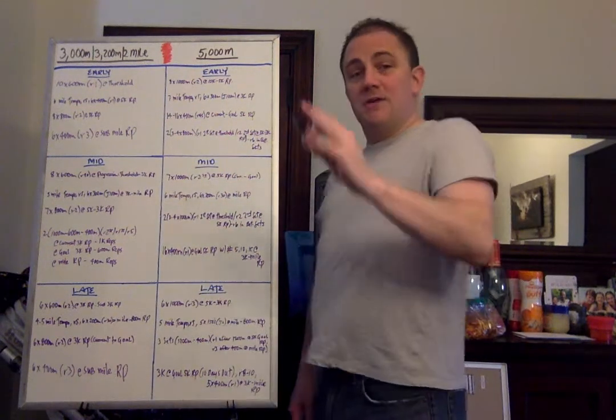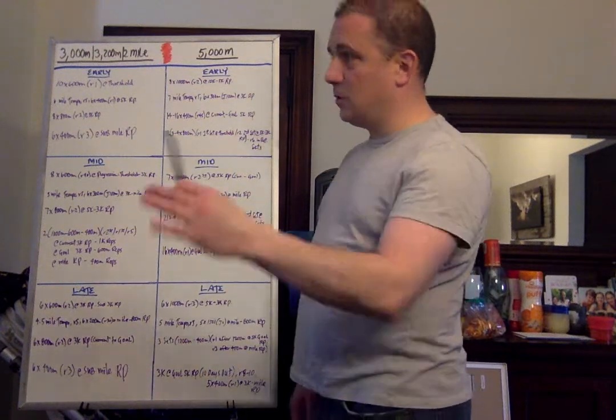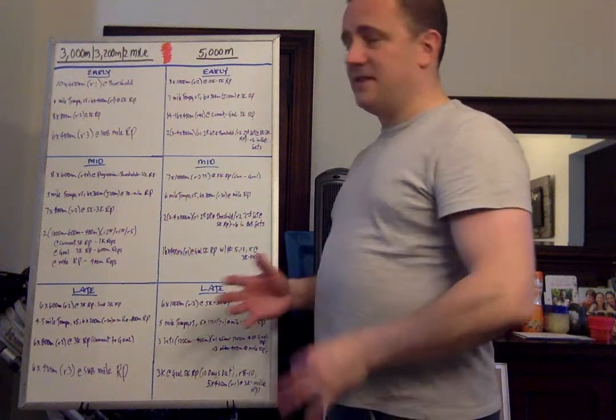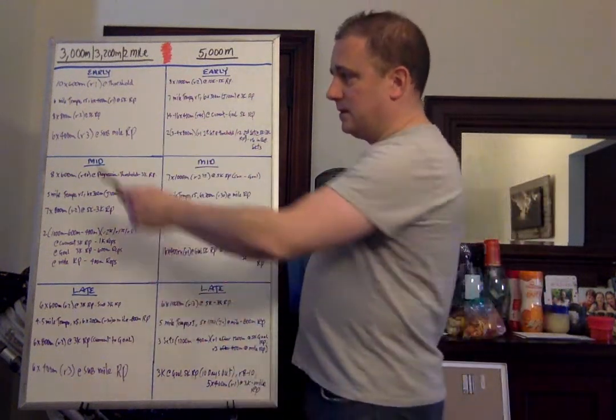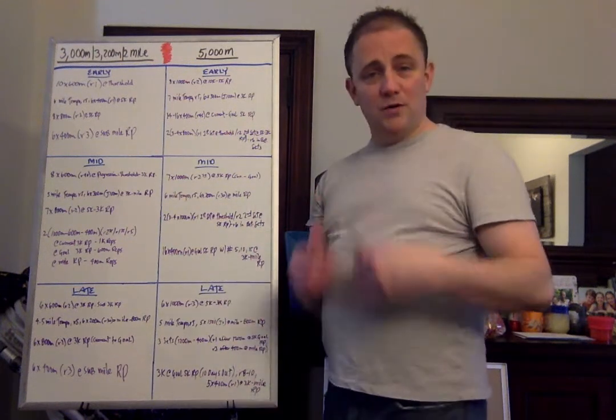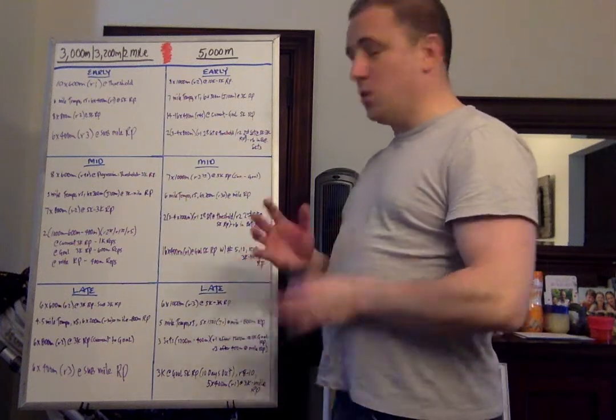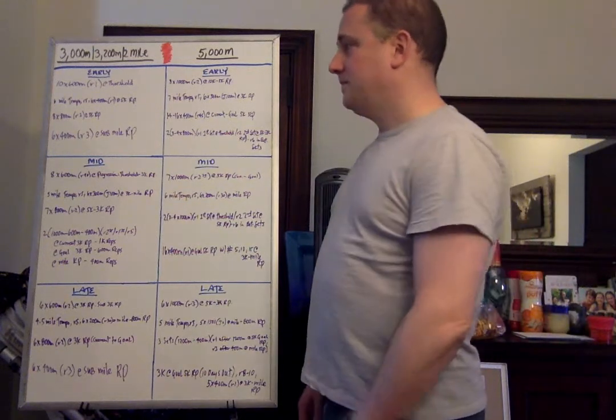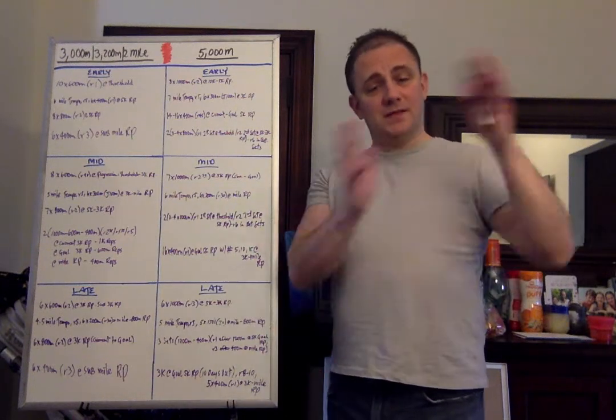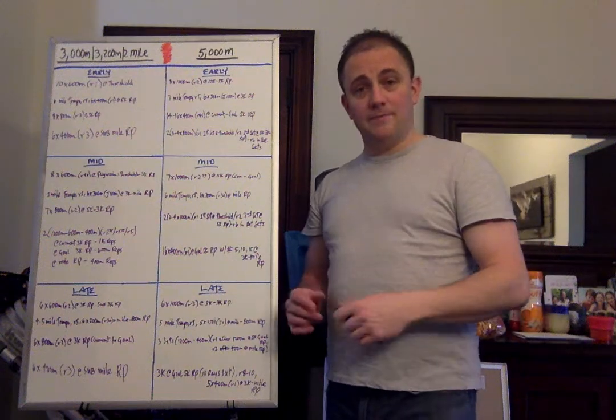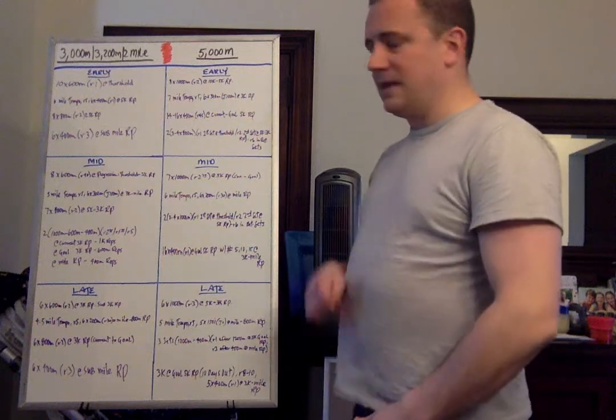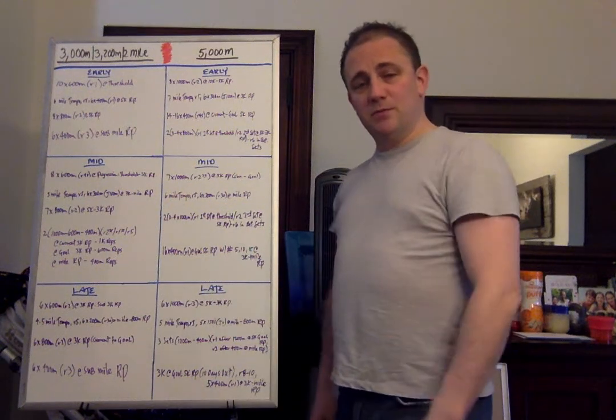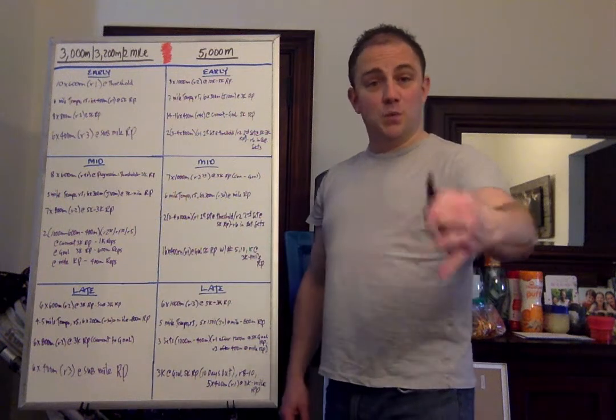Eight by 800 meter efforts is the next one with a two minute recovery at 5K pace, current to goal, just slower than your 3K race pace. And then the last one, this is a workout that you can do whether you're training for a mile or 800, 3K or a 5K. Six by 400 meter efforts with a three minute active recovery at sub mile race pace, faster than the mile race pace. You want to have the speed of a miler and the 800 meter runner and the strength of a 5K, 10K runner if you want to run a good 3K or a two mile. Being able to respond to any types of moves is going to put you in a position to be that much more versatile and therefore much more dangerous as an athlete.